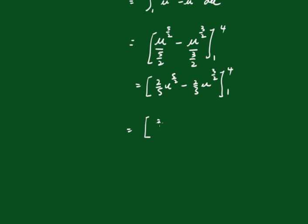Substituting these in, we get 2 fifths times 4 to the 5 over 2 minus 2 thirds times 4 to the 3 over 2, and then minus 2 fifths times 1 plus 2 thirds times 1. And when you put that all through on your calculator, you get 116 over 15 as your final result.